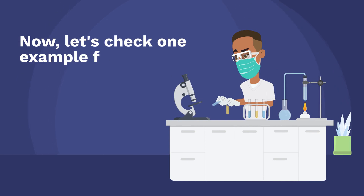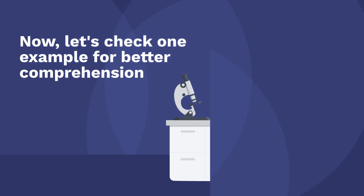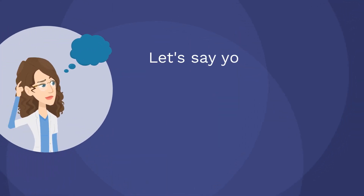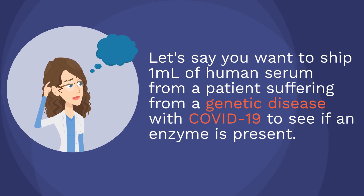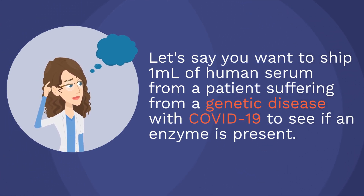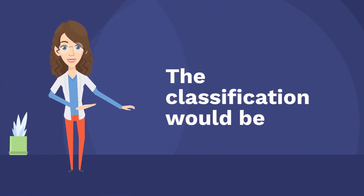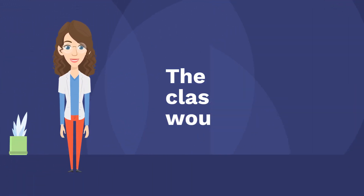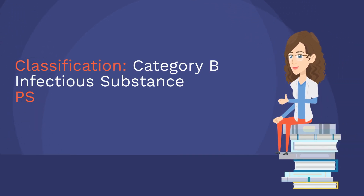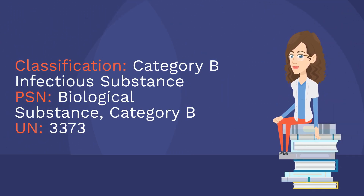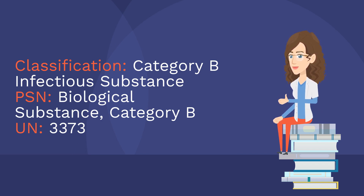Now let's check one example for better comprehension. Let's say you want to ship one milliliter of human serum from a patient suffering from a genetic disease with COVID-19 to see if an enzyme is present. The classification would be: Category B Infectious Substance. PSN: Biological Substance Category B, UN 3373.